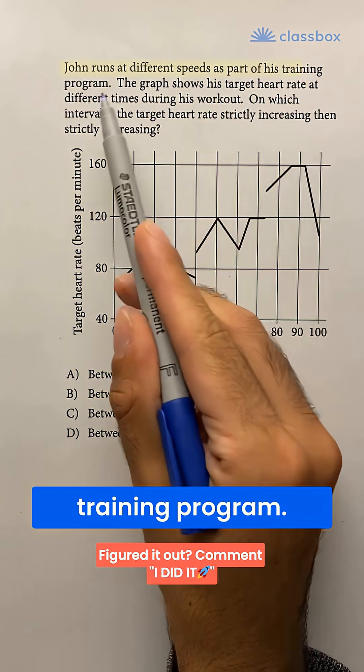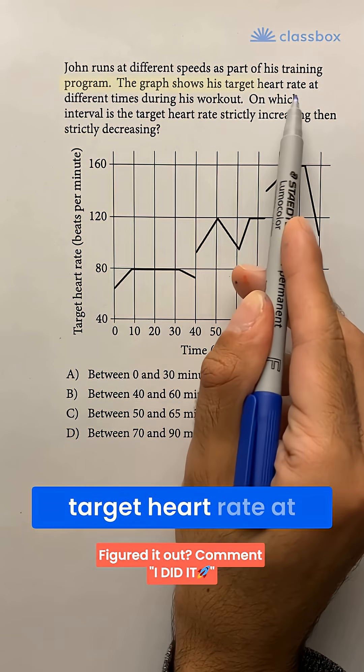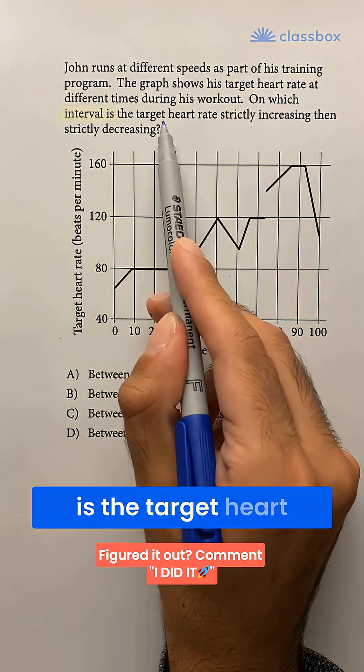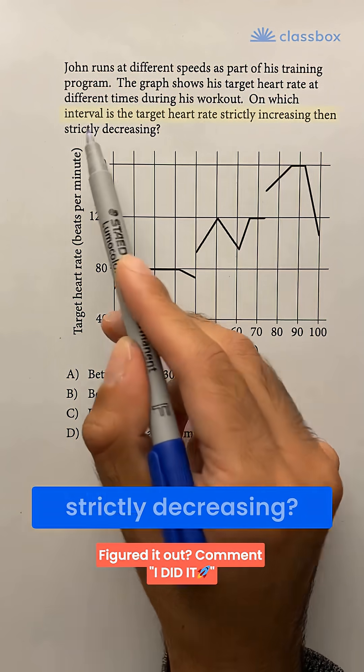John runs at different speeds as part of his training program. The graph shows his target heart rate at different times during his workout. On which interval is the target heart rate strictly increasing then strictly decreasing?